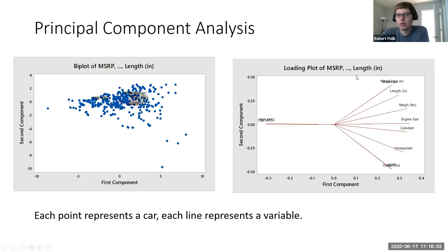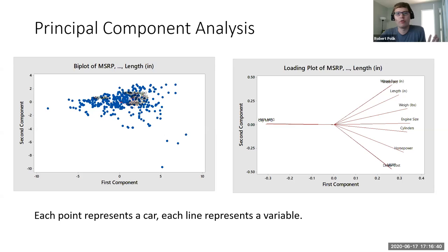Looking at the second component: if you go up, your car gets larger — wheelbase in inches, length in inches. If you go down, your costs get smaller. Things like wheelbase and cost move in both component directions. What you need to understand is that variation in the first component and the second component are orthogonal to one another. If you tried to fit a line of best fit to this data, there's no trend — up-right, down-left, straight up, straight right — because these variations are unrelated to one another.